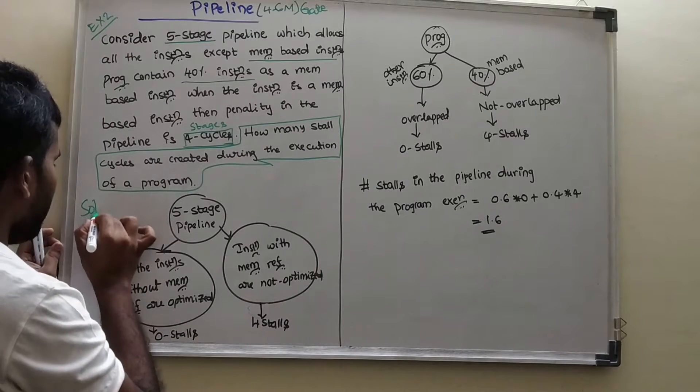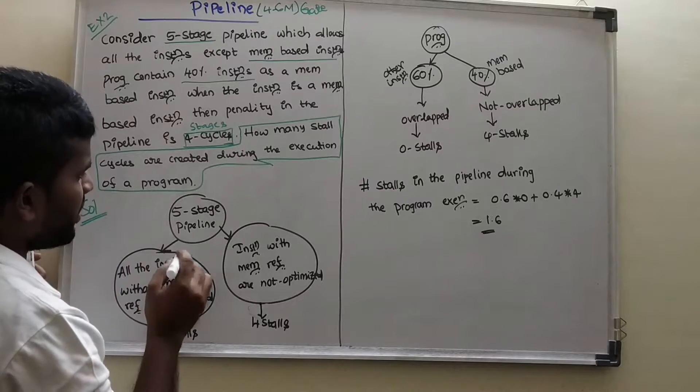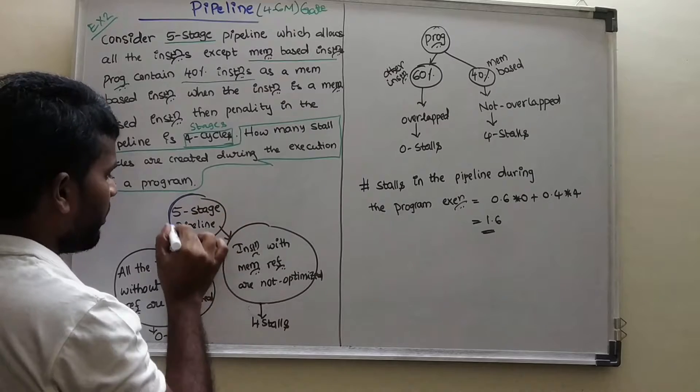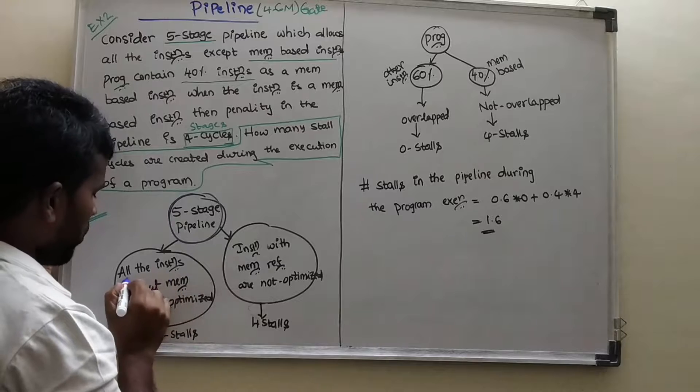Actually, we have to find out how many stalls created during the execution of the program. Our solution will be, you have to do analysis like this every time. See, analysis will be 5 stage pipeline. What is the given? It is the given one.